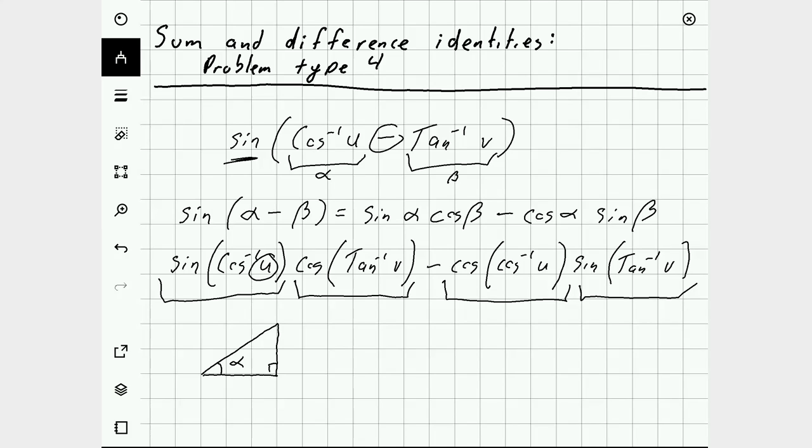And the ratio adjacent over hypotenuse in this case is u. Easiest way to write that is u over 1. So the cosine of alpha is u over 1. That's what inverse cosine of u is telling us. And that's the adjacent side over the hypotenuse.